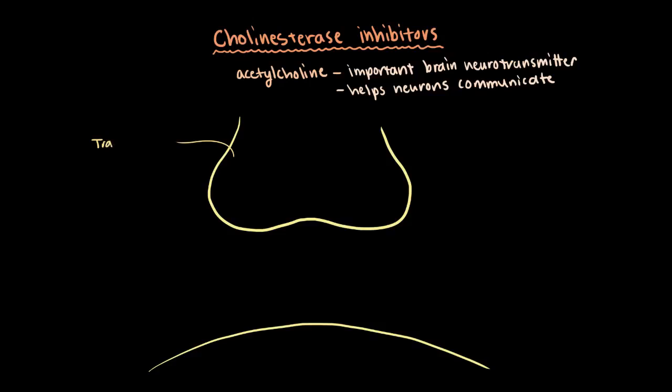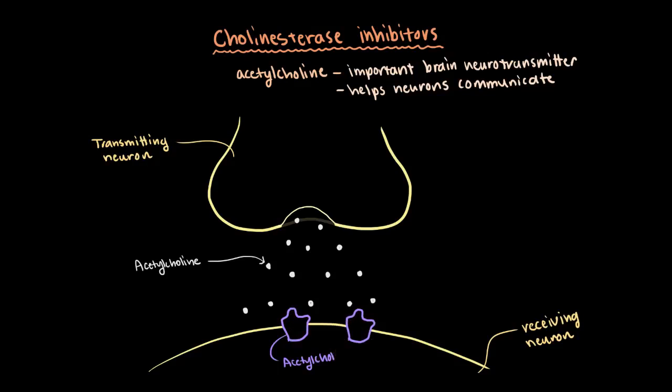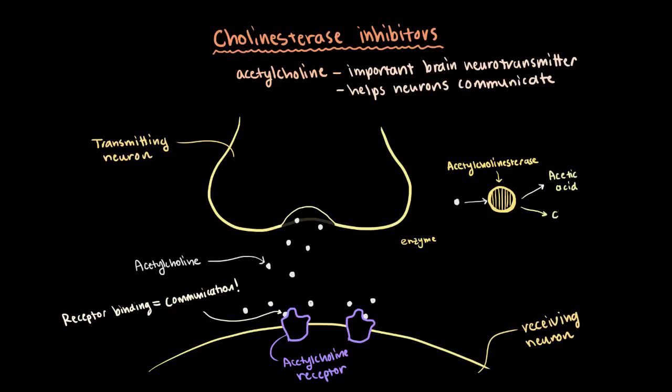So say we have these two neurons here that are trying to communicate: one transmitting neuron and one receiving neuron. The transmitting neuron releases the neurotransmitter acetylcholine, which then binds to an acetylcholine receptor on the receiving neuron. To sort of regulate this process though, you have this enzyme that constantly breaks down the acetylcholine that's being released. And this guy is called acetylcholine esterase, and it breaks acetylcholine down into acetic acid and choline.